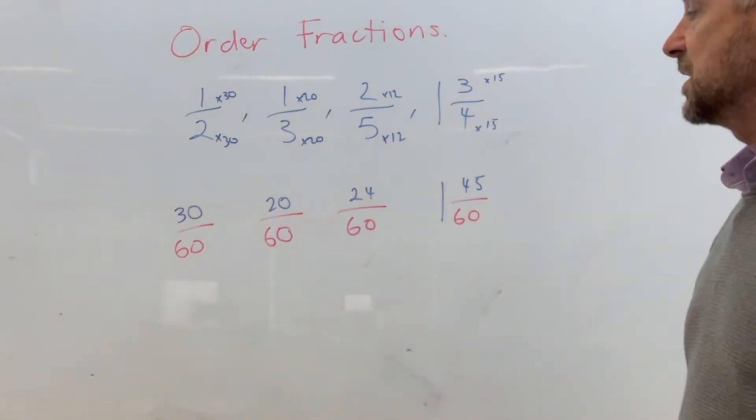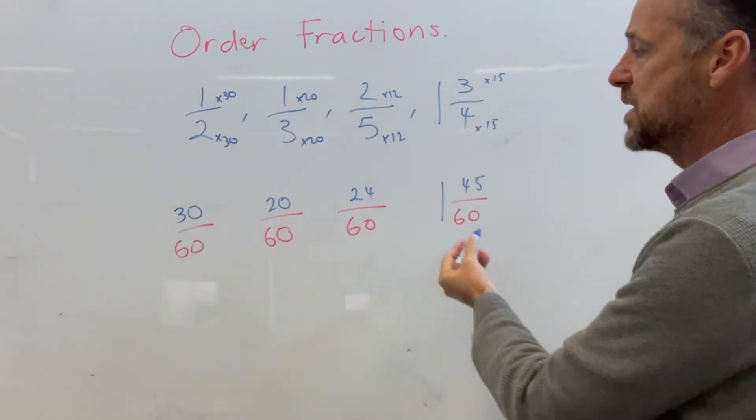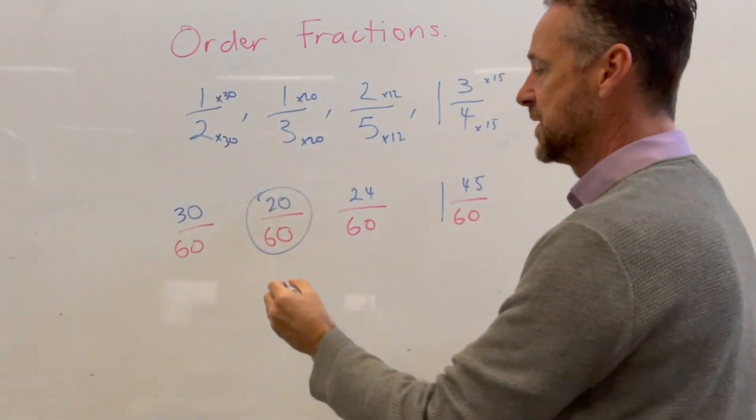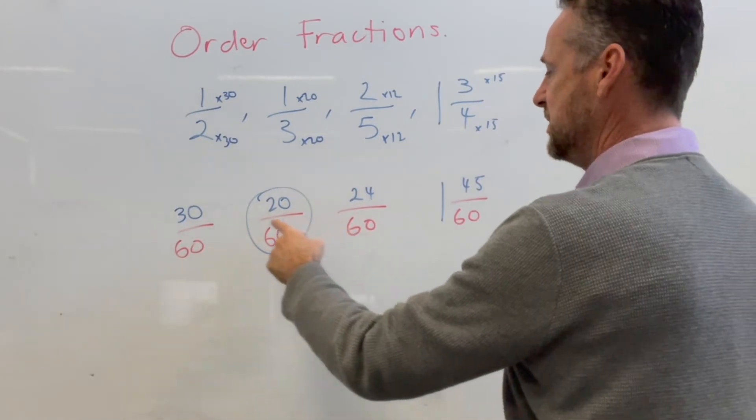Now you can do your comparison. So now you can see that the smallest one out of this group is this one here, followed by this one here, followed by there, by there.